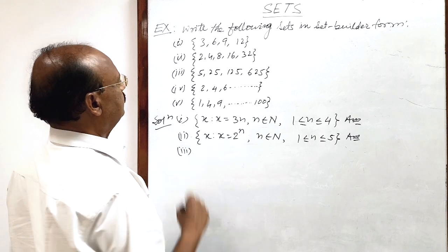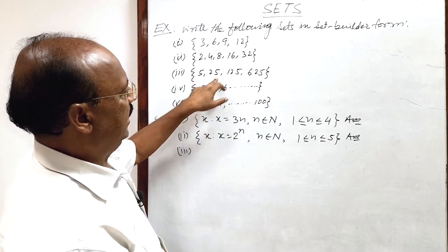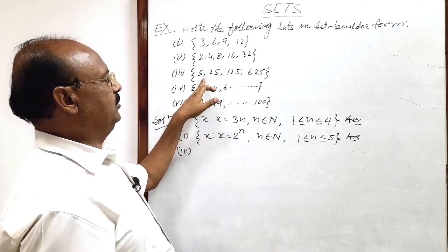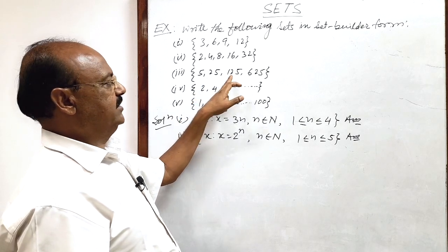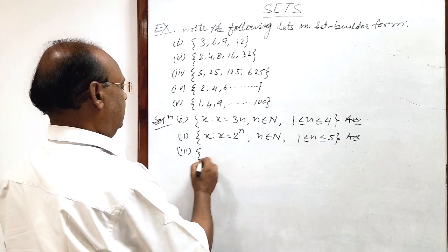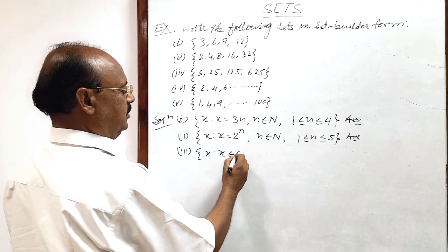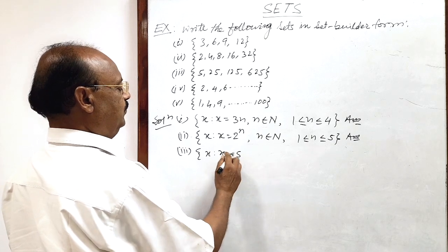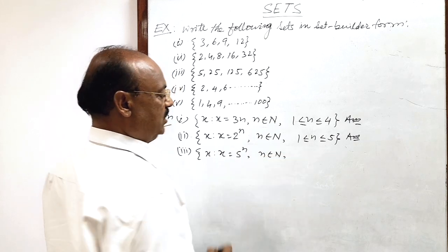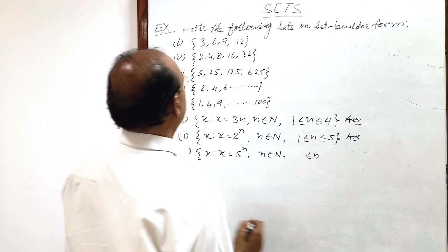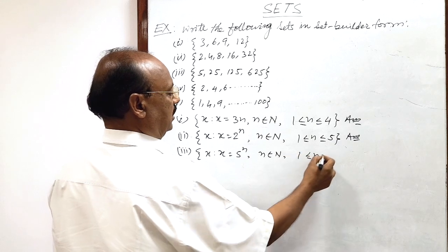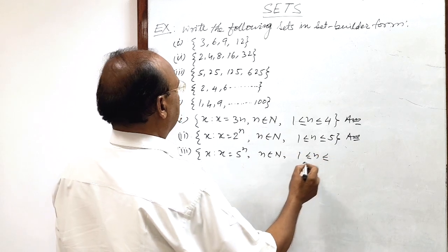Now let us see the third part: 5, 25, 125, 625. This is 5 to the power 1, 5 squared, 5 cubed, 5 to the power 4. So here we can write x such that x is equal to 5 to the power n, where n belongs to the set of natural numbers and n is greater than or equal to 1 and less than or equal to 4.